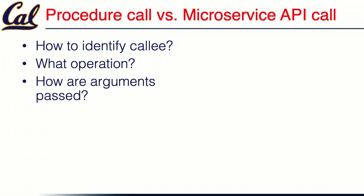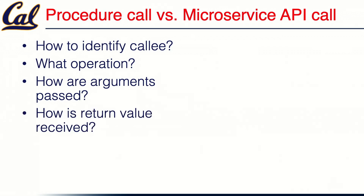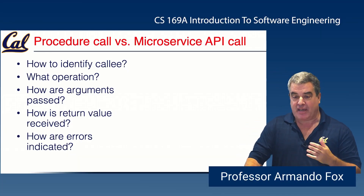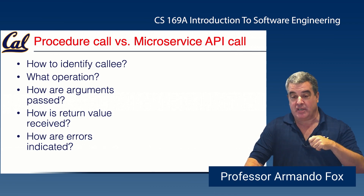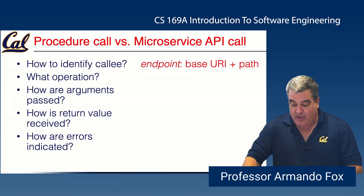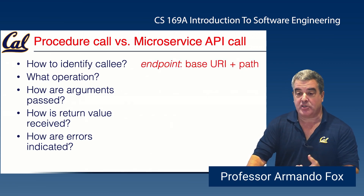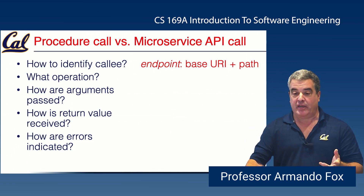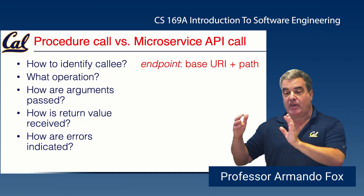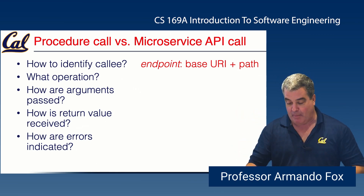You have to know how to pass arguments to the function — which arguments are required, which are optional, and the expected order. You need to know how to interpret the return value and what your expectations should be if something goes wrong — whether it's an exception or a sentinel value. All of these same things have to be dealt with when your procedure call is actually a call to an external service. Instead of a library, we're now talking about a server that implements some microservice, and every microservice will advertise what they call an endpoint — a base URI that all operations will begin with.